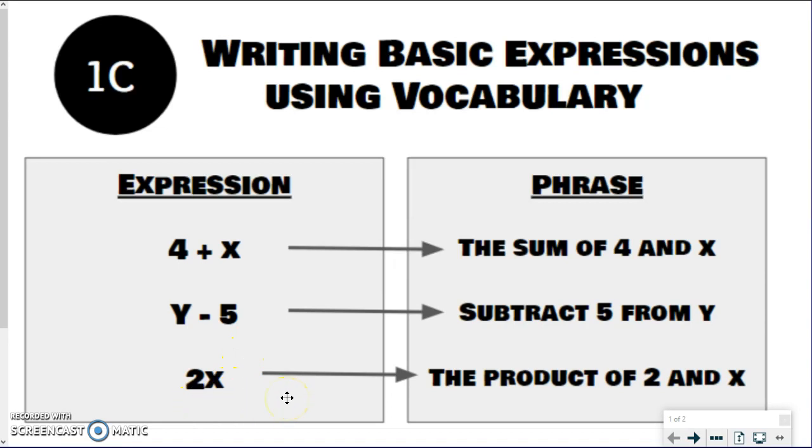For 2x, we can't just say 2x because that doesn't tell us anything. We need to show multiplication. You could say the product of 2 and x, or 2 times a number, or twice a number, or double x, or something like that. So lots of options.